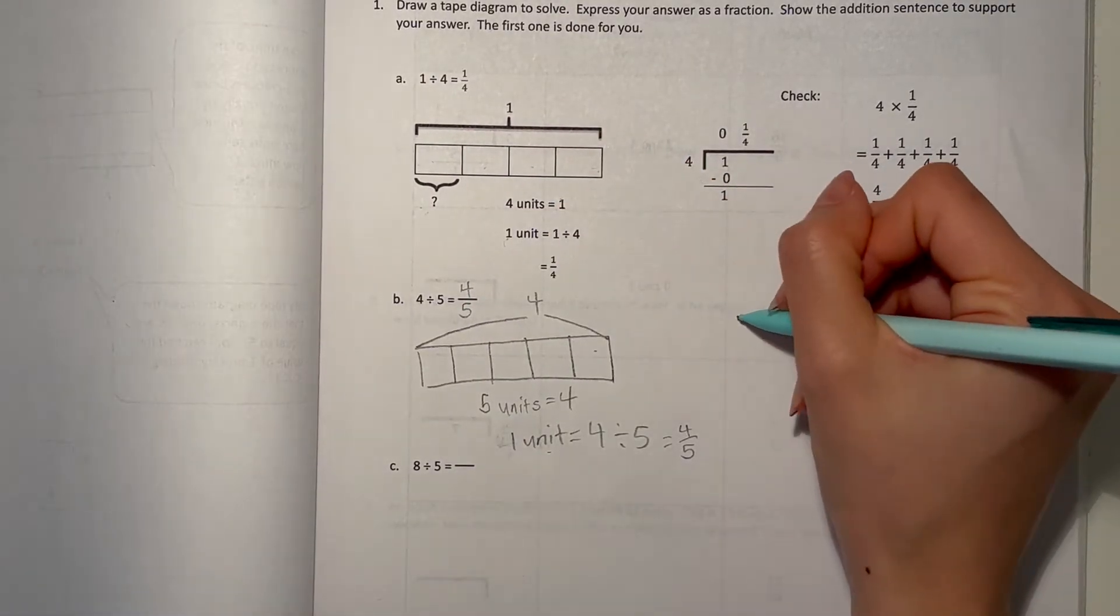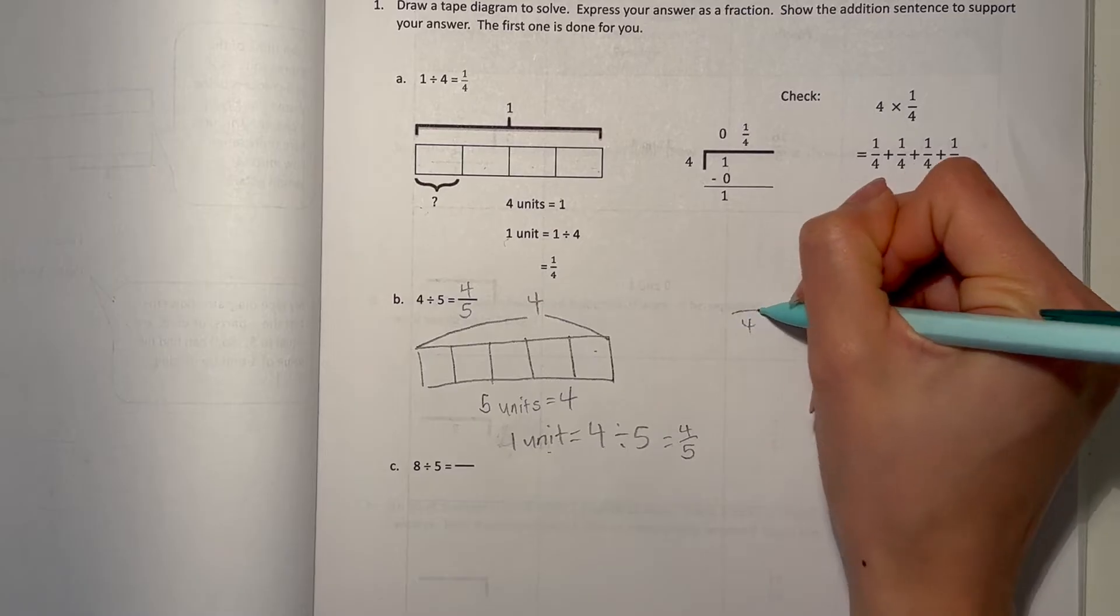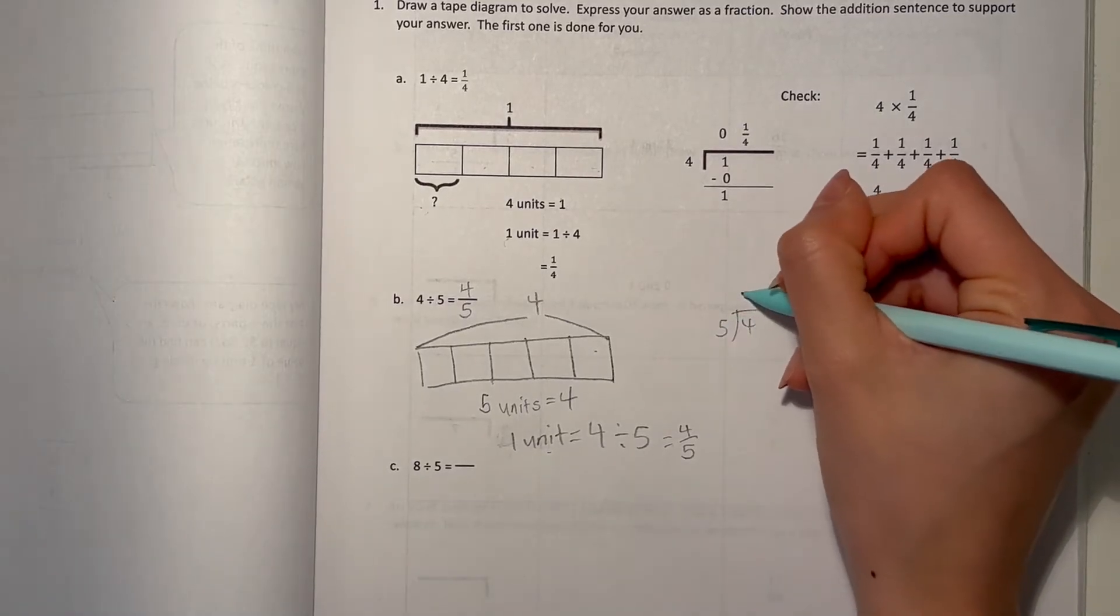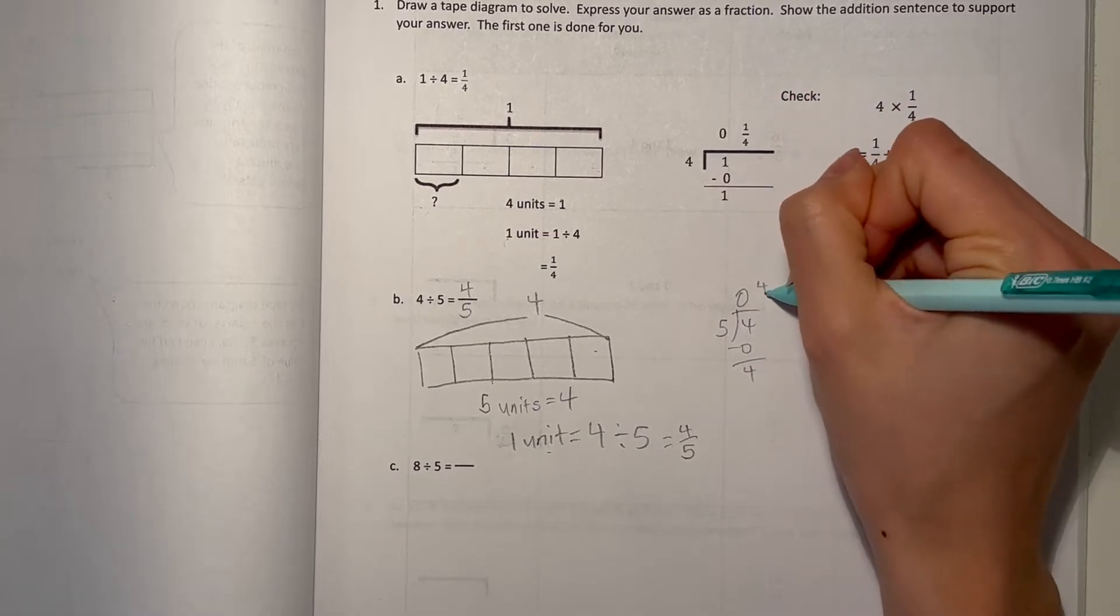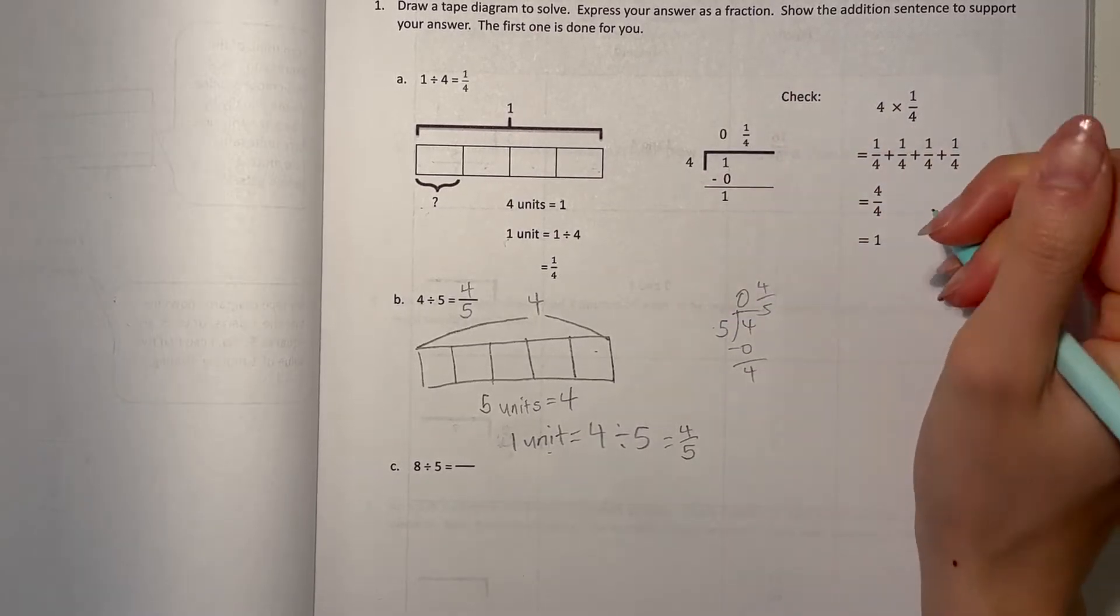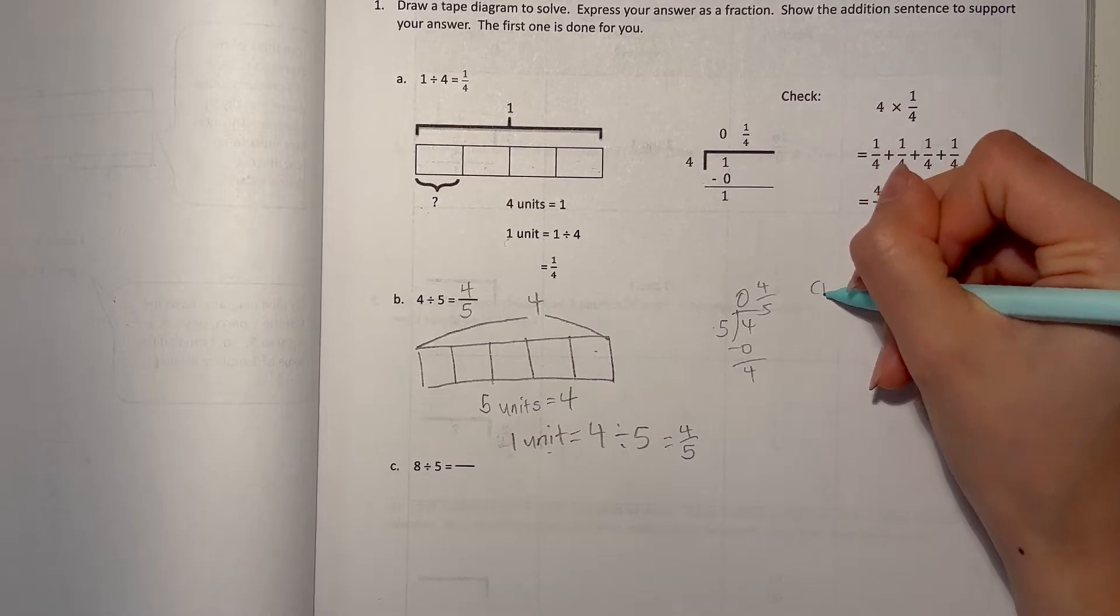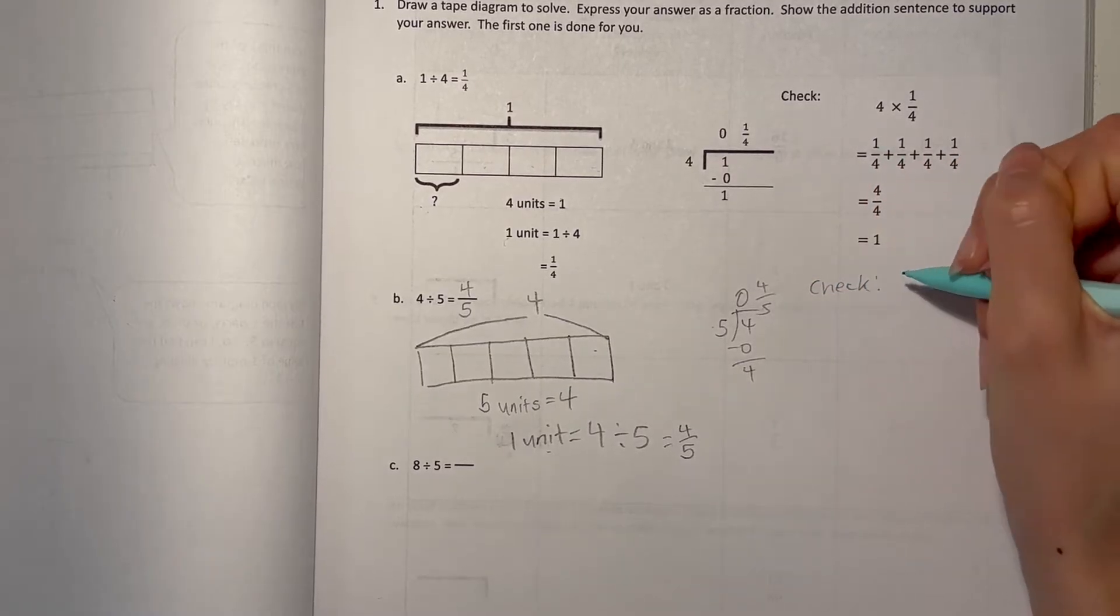And our long division, 4 divided by 5, 5 goes 0 times into 4, minus 0, 4 left over. So our answer is 4 fifths. And check our work. Check. 4 fifths.